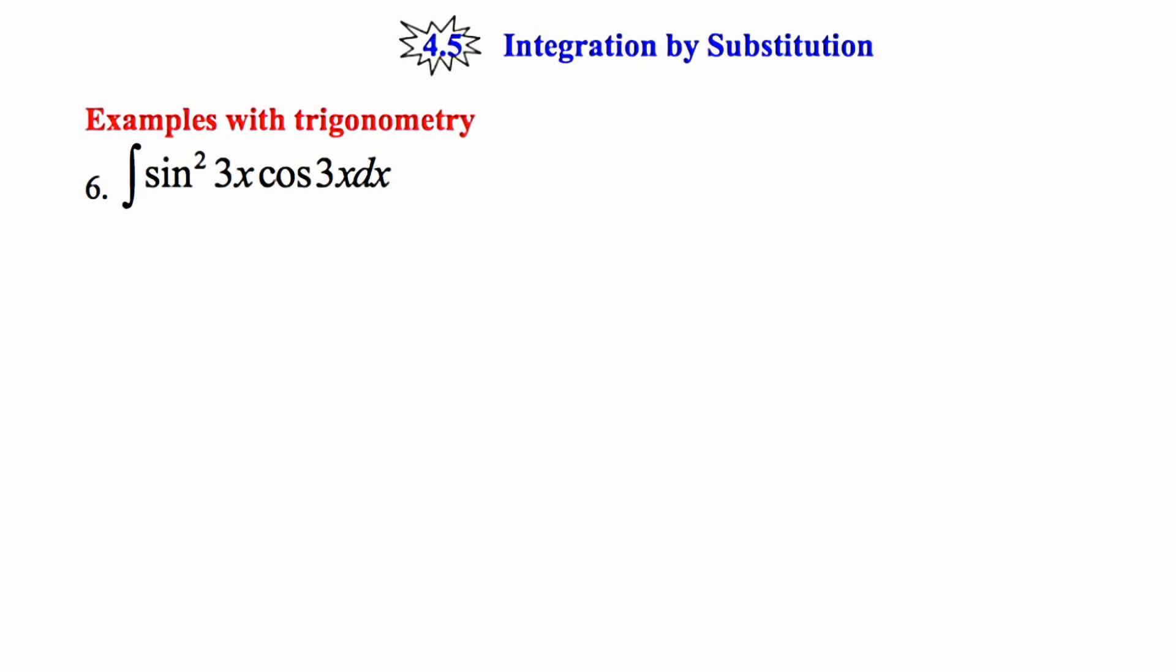So if I'm deciding between allowing u to be the sine 3x or the cosine 3x, I'm going to first try to allow u to be the sine 3x because it comes from a more complicated expression being that it's sine squared. So let's give that a try, allowing u to be sine 3x.